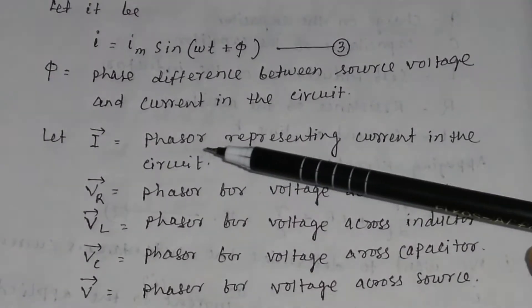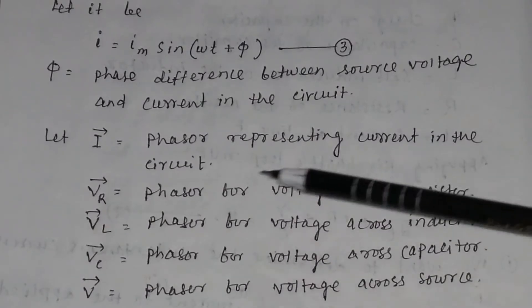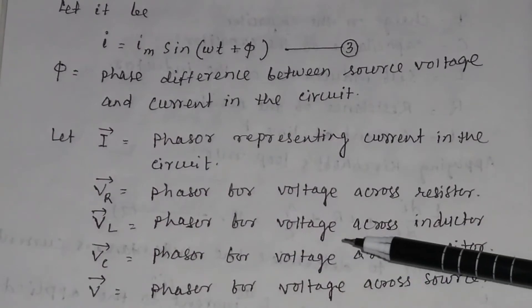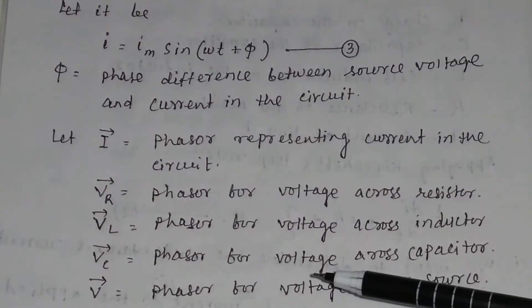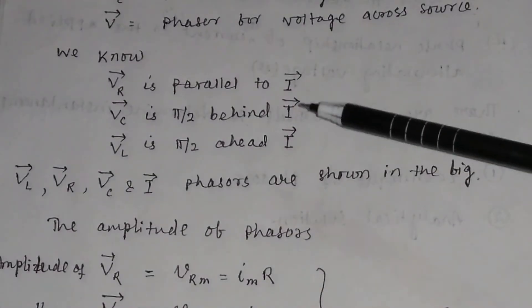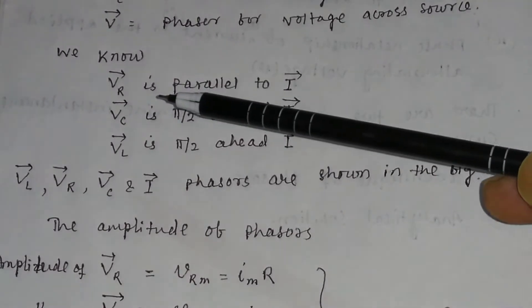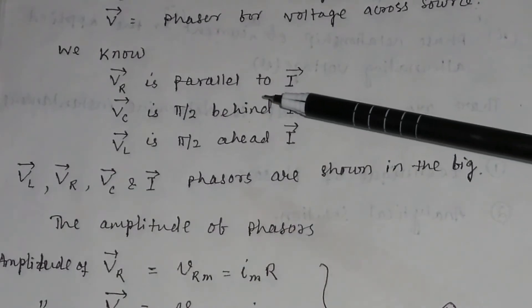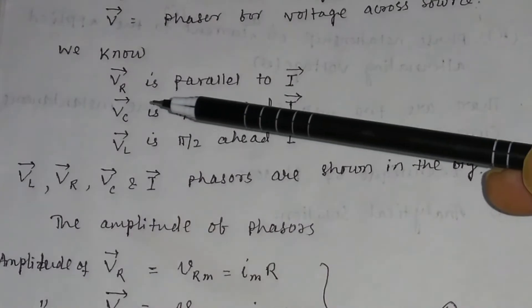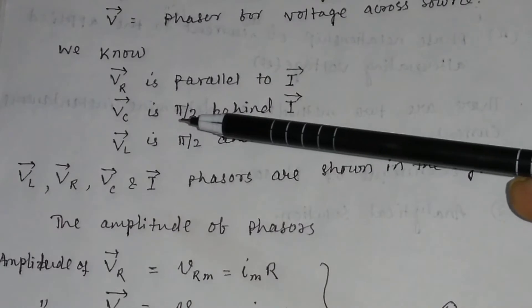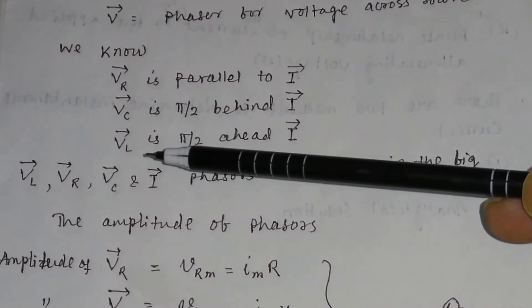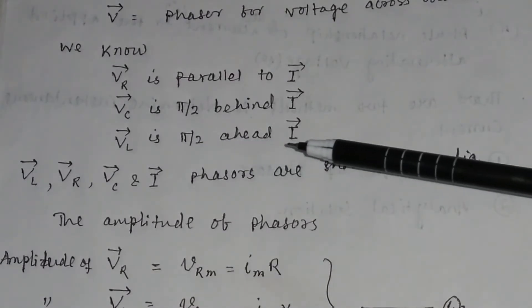We consider I as the phasor representing current in the circuit. VR is the phasor for voltage across the resistor, VL is the phasor for voltage across the inductor, VC is the phasor for voltage across the capacitor, and V is the phasor for source voltage. If an AC circuit contains resistance only, VR is parallel to I. For a purely capacitive circuit, the voltage phasor is π/2 behind the current phasor.